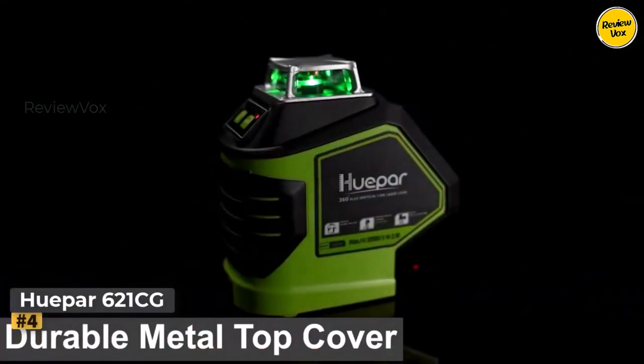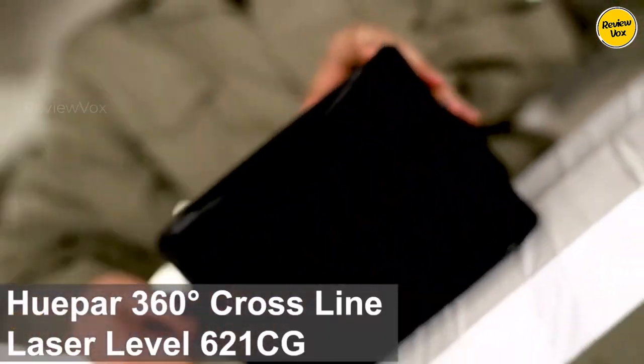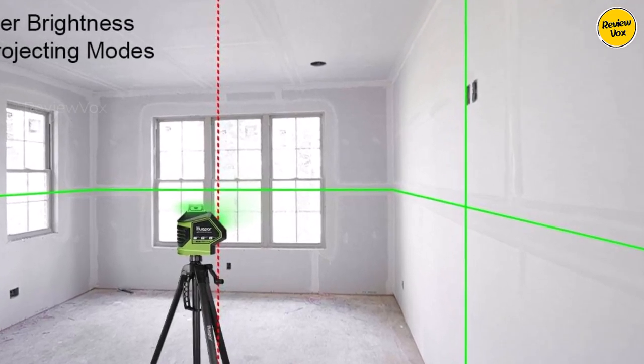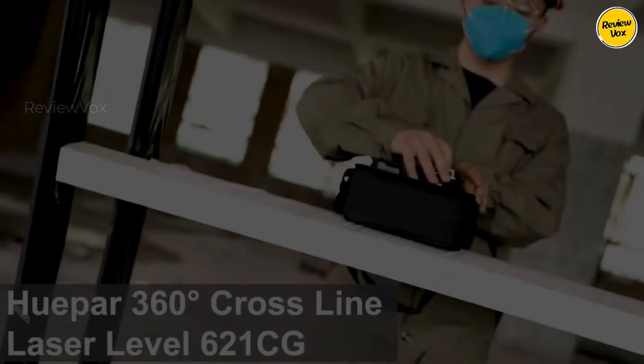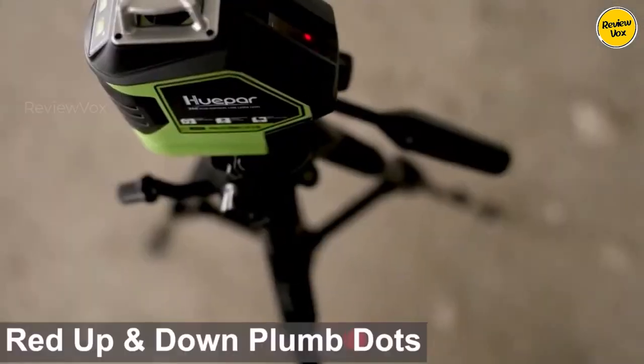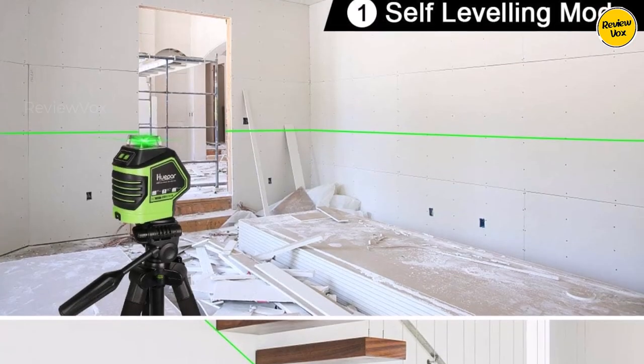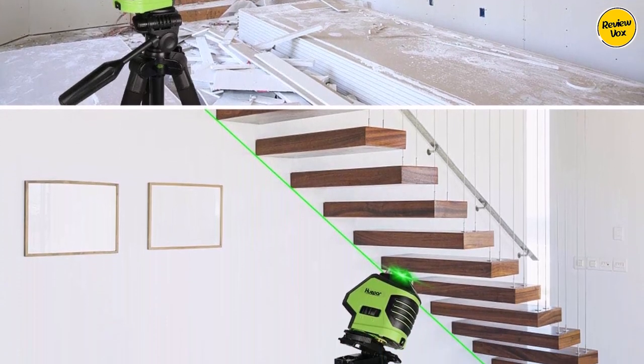Hupar 621CG. The 621CG laser level stands out as a 360-degree tool, offering enhanced versatility for tasks beyond arm's reach. Unlike basic laser levels, it projects cross lines around the room in different directions simultaneously, making it ideal for tripod-based operations. With a 140-volt projection range covering both floor and ceiling, it ensures comprehensive coverage.